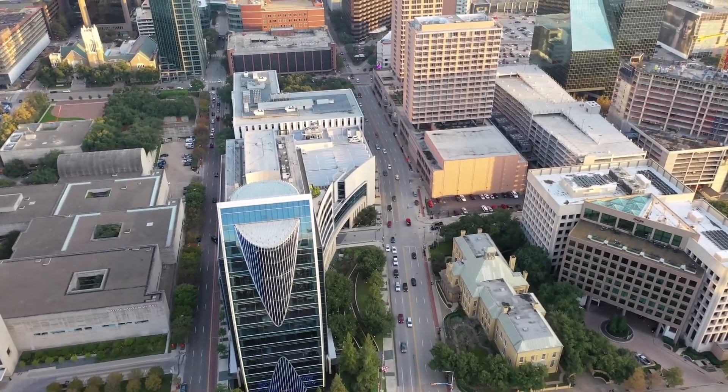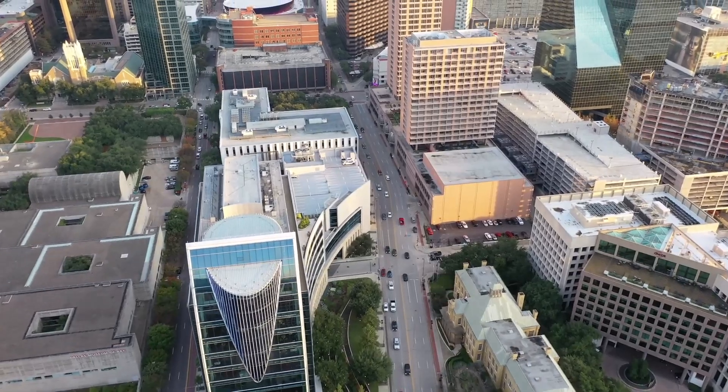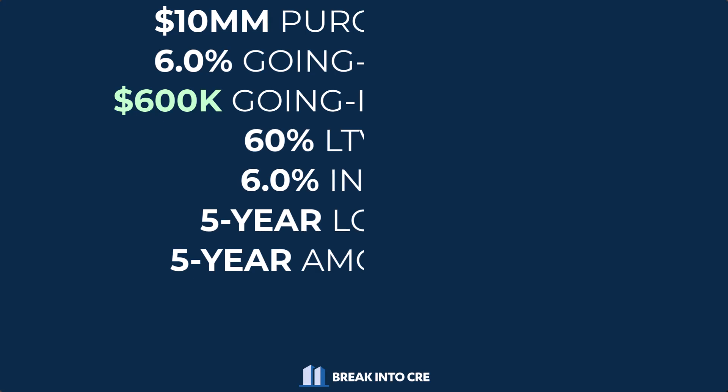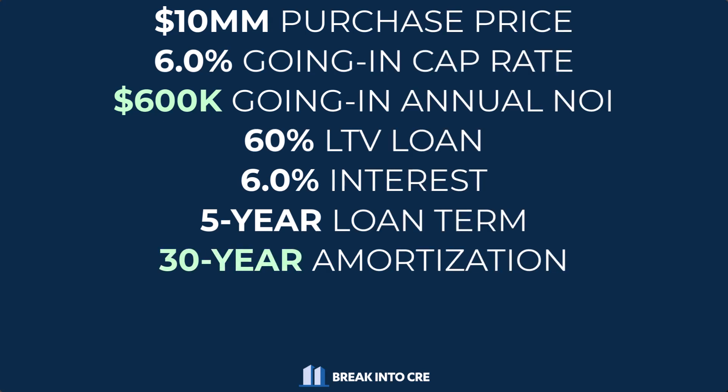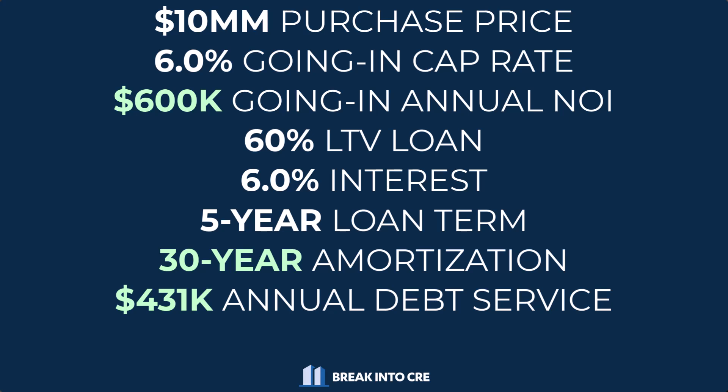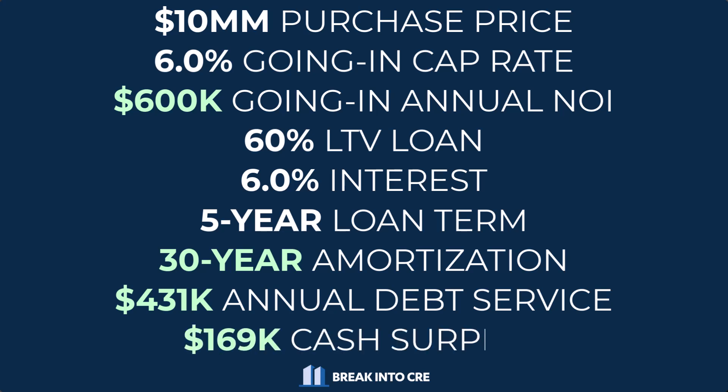To incentivize lending activity on commercial real estate transactions, this is where lengthening the amortization period can come into play. If we keep our loan term at five years but lengthen our amortization period to 30 years, our annual debt service requirements drop by almost 70% — from almost $1.4 million a year to just over $431,000 a year — which ends up having benefits on both sides of the equation.